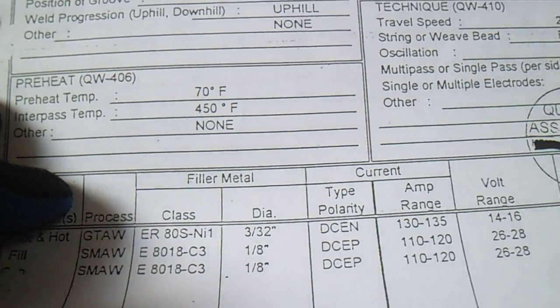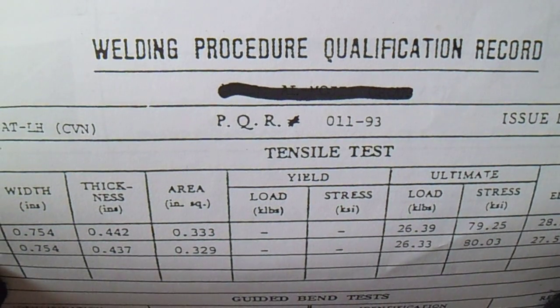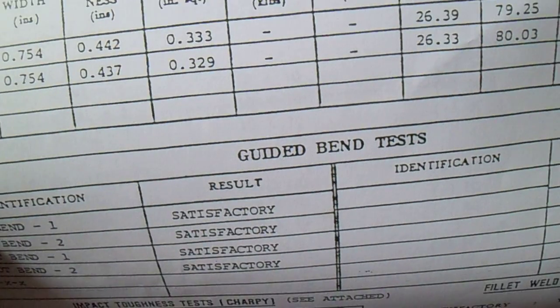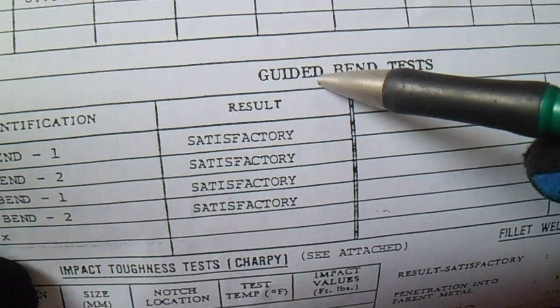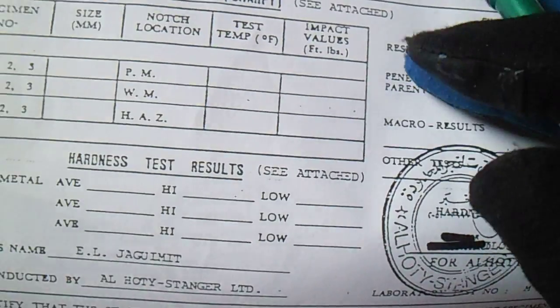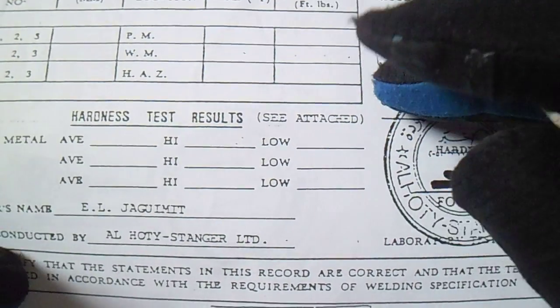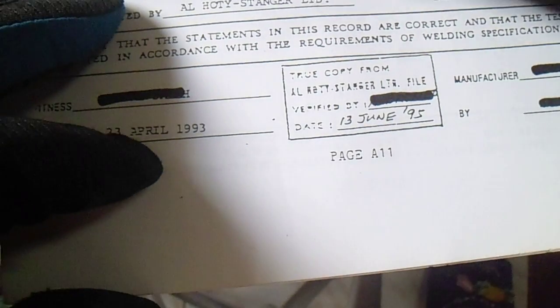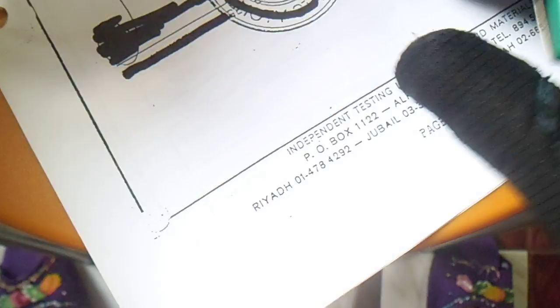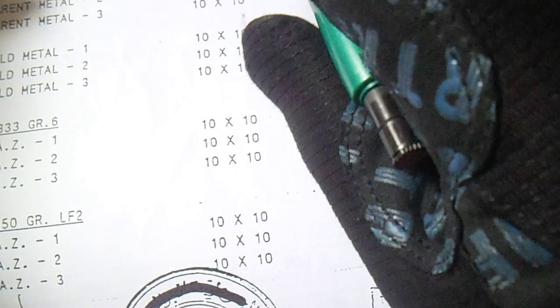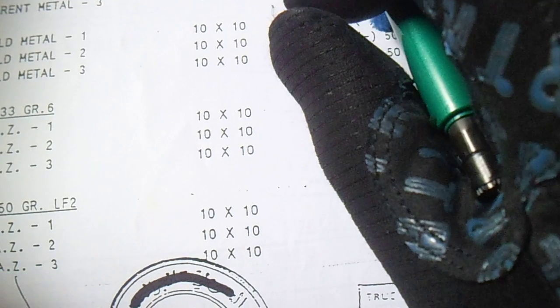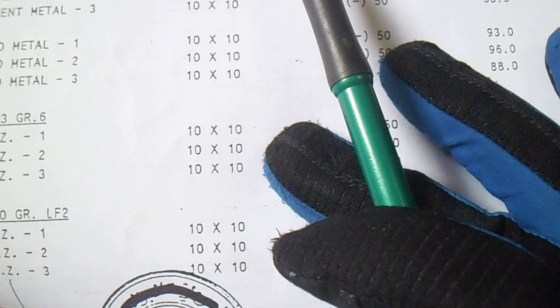The PQR qualification record includes tensile tests, guided bend tests, hardness tests, and toughness tests. Also included is the WPS star free impact or Charpy V-notch test results.